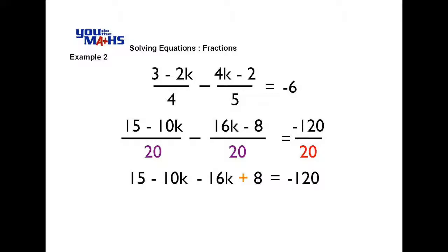Notice how the second numerator on the left hand side becomes minus 16k plus 8 because we're subtracting the whole fraction. So in effect, it's taking away 16k and taking away negative 8. When we simplify all of that, we get 23 minus 26k equals negative 120.